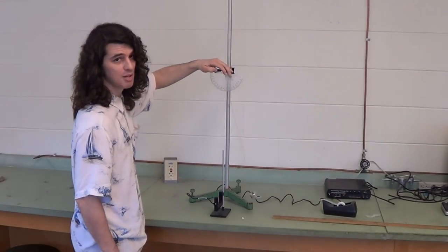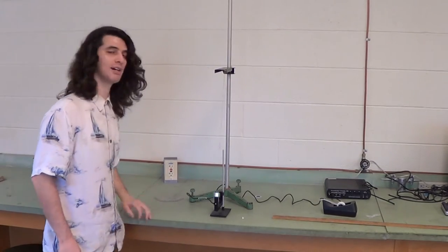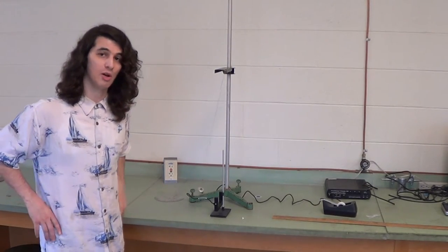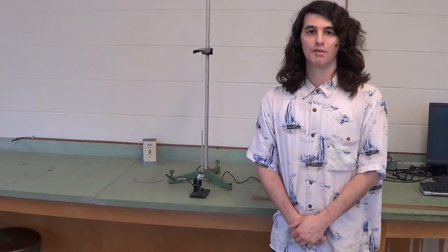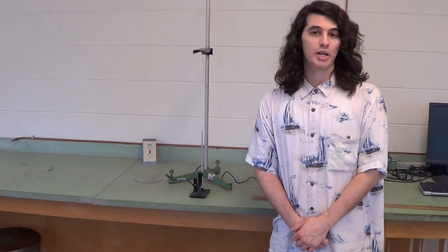At this point, we allow the plumb bob to go through several periods while Data Studio records this. For the second part of the experiment, we choose an arbitrary amplitude, preferably about 10 degrees, but possibly 15 if it's more convenient.